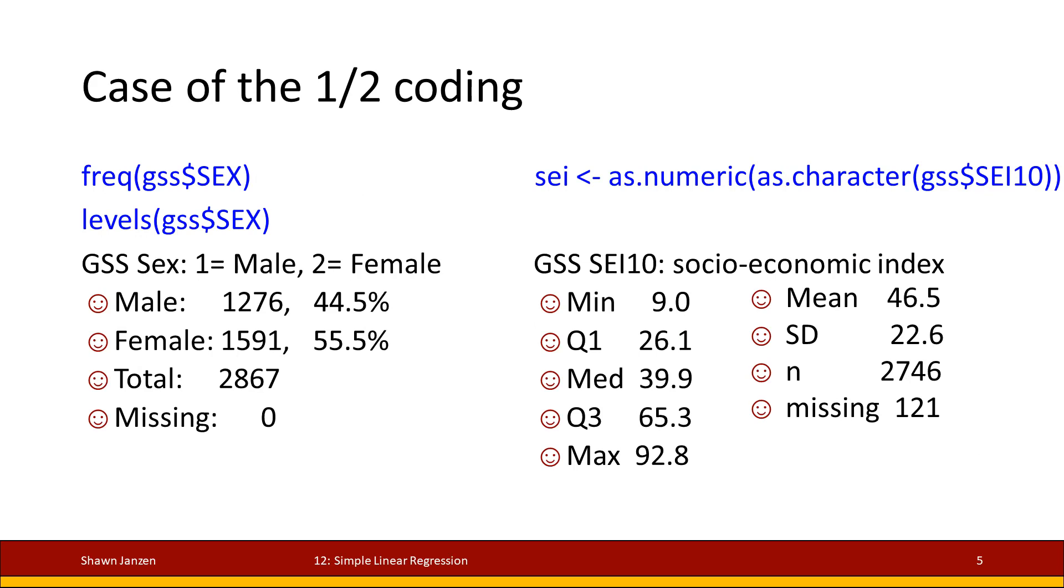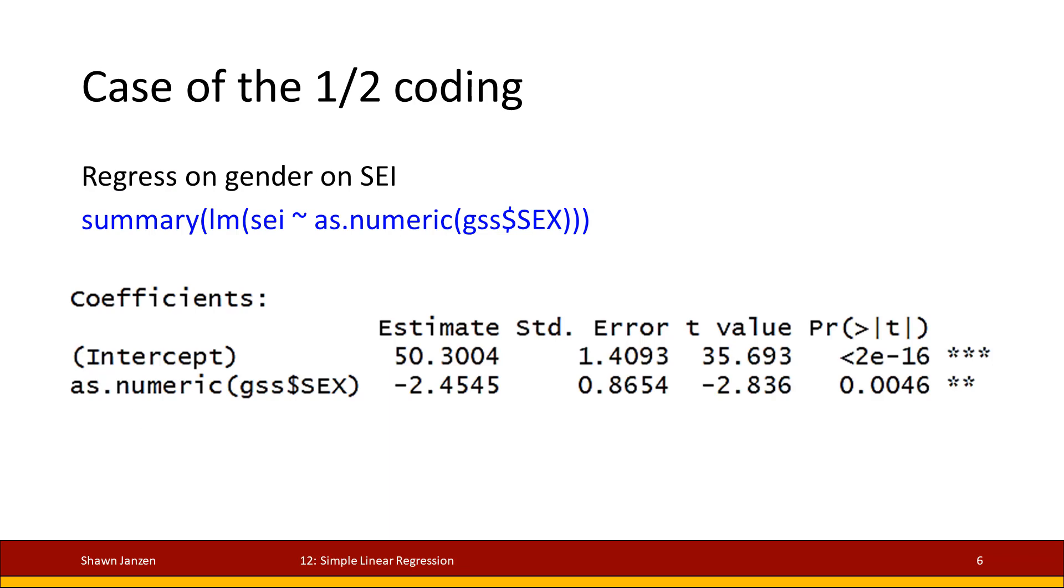Let's go ahead and use a brief example to illustrate what I'm talking about. In this case, I'm looking to see how one's gender affects their socioeconomic index. I'm using data from the General Social Survey and it's coded so that 1 are males and 2 are females. There's about 1,300 men, 1,600 women. The socioeconomic status variable goes between 9 and 93 with an average of about 46-47.